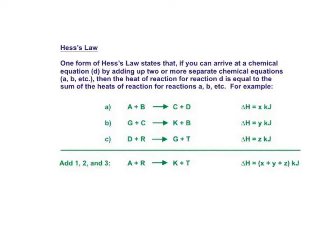This is a graphic I found online that I thought might help illustrate Hess's Law in a little more complex manner. We have three individual reactions and we have three different supposed Delta H values. So if we add up these three reactions as they're written and we cancel out like terms, we'll see if we can get this A plus R makes K plus T.